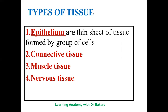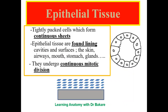The nervous tissue basically functions to receive impulses, interpret and analyze them, and relay the outcome to the target organ for a response to take place. You can check our lecture on the nervous tissue. The epithelial tissue is defined as tightly packed cells that are found lining the interiors of cavities or lining surfaces.